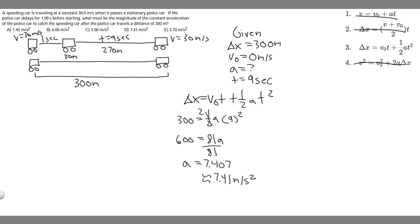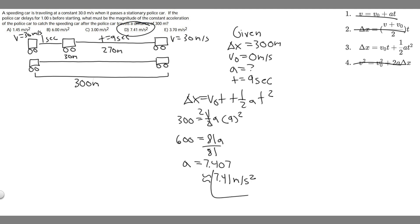So 7.41 meters per second squared is going to be the magnitude of the police car's acceleration to catch the speeding car. Looking at the given options, we can see that answer D matches what we got — 7.41 meters per second squared is the answer to this problem.